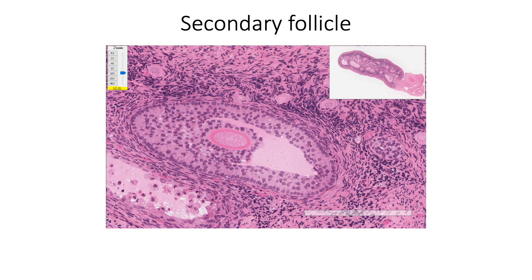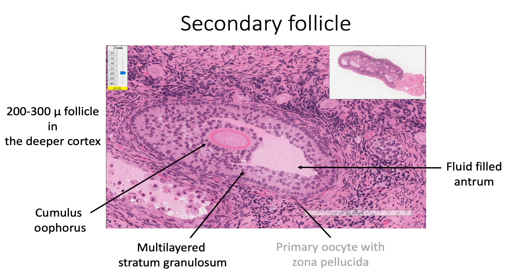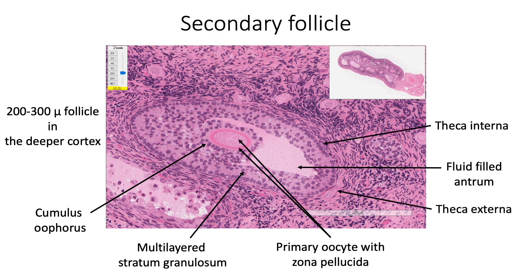The primary follicles progress to become secondary follicles. These are about 200 to 300 microns in size and are found in the deeper cortex. Multiple fluid-filled pockets appear between the granulosa cells and join together to form a single large fluid-filled antrum. This antrum segregates the granulosa cells into a multilayered stratum granulosum lining the antral cavity and the cumulus oophorus surrounding the primary oocyte covered by zona pellucida. The surrounding stroma differentiates into an inner cellular theca interna and an outer fibrous theca externa.